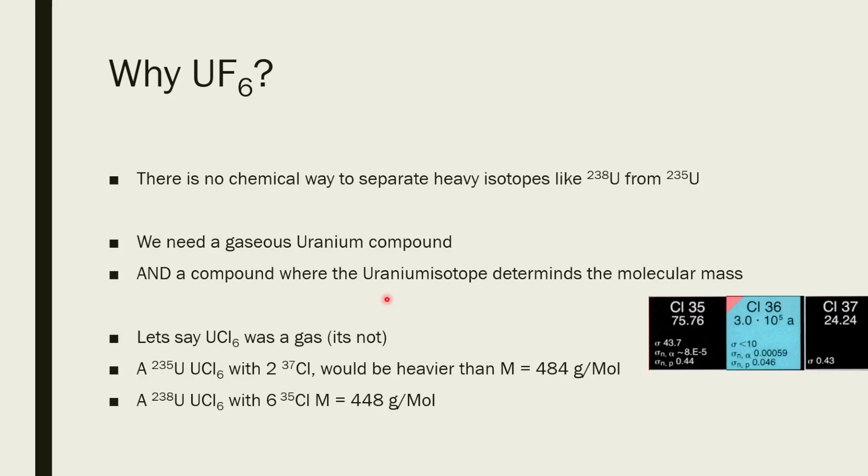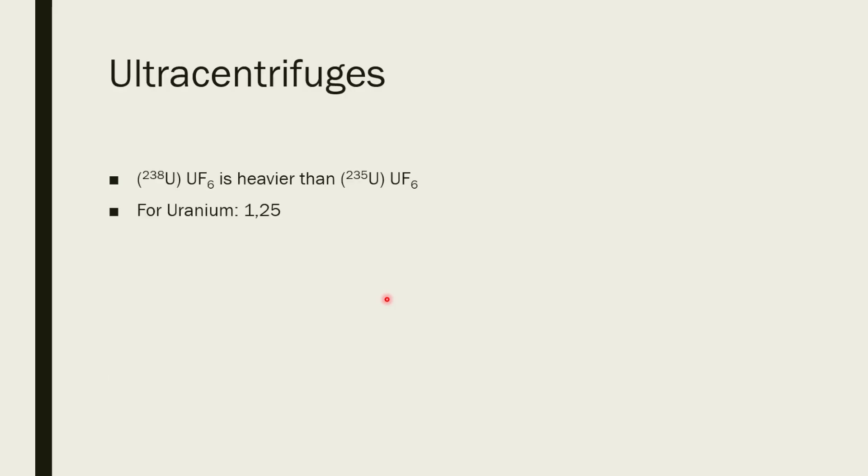So if you were to have a uranium hexachloride molecule with the uranium-235 in it, and two of these six chlorine atoms would be the chlorine-37, they would be heavier than a uranium hexachloride which contains the uranium-238. So you can't differentiate between a uranium hexachloride that contains the uranium-235 or the uranium-238. Therefore, you will need fluorine because fluorine is one among few elements that only occurs naturally as one isotope, the fluorine-19. So the whole molecular mass is determined by the uranium isotope.